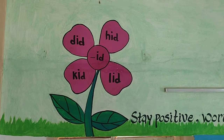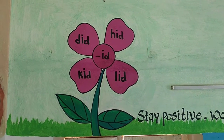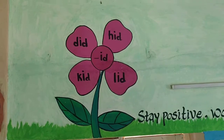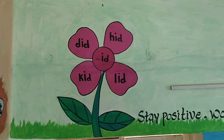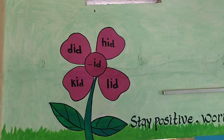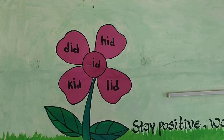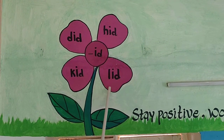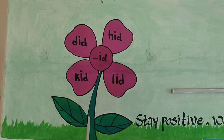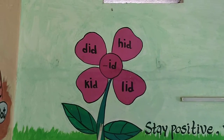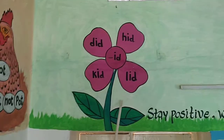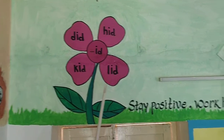Hi children, today we learn some words with flowers. Ok now, let us see the picture. What is this picture? Yes, this is a flower.